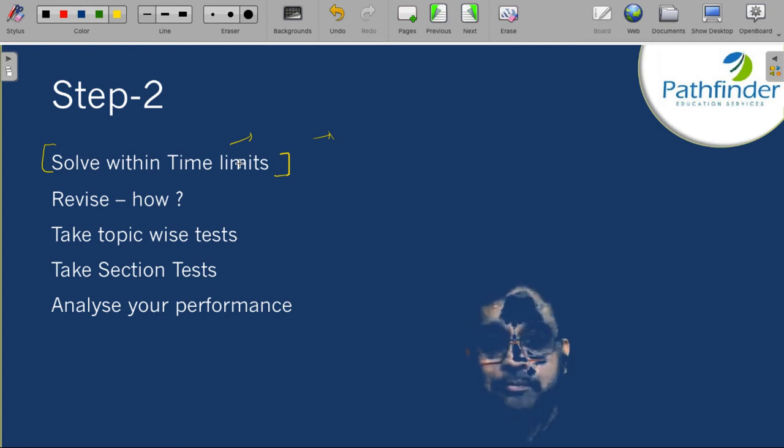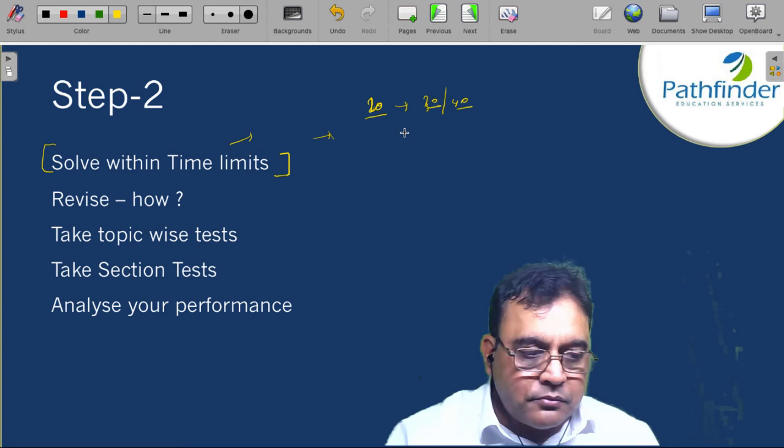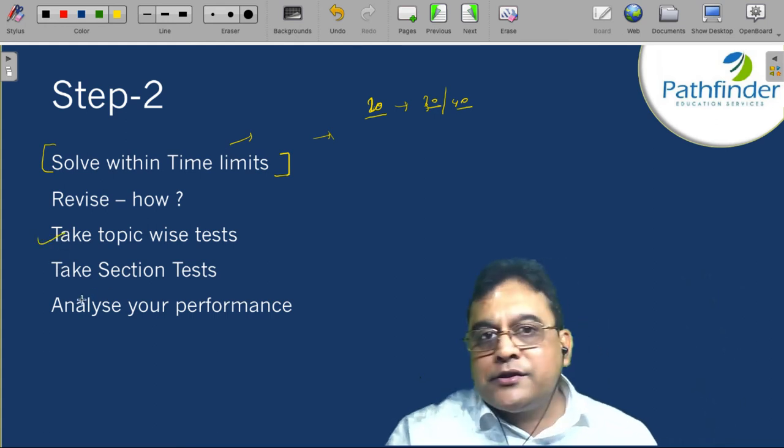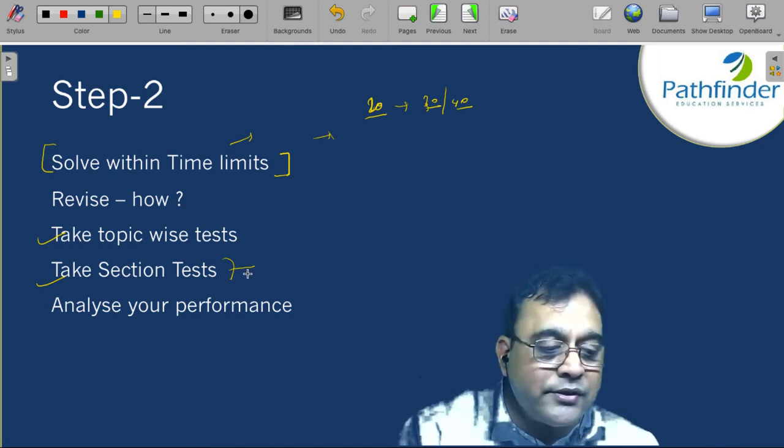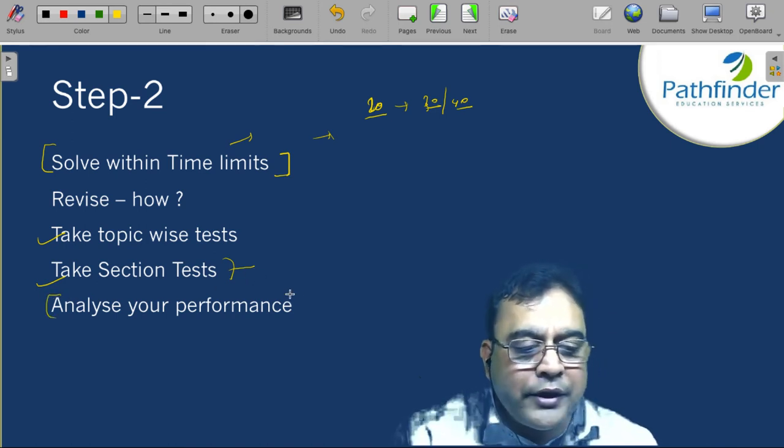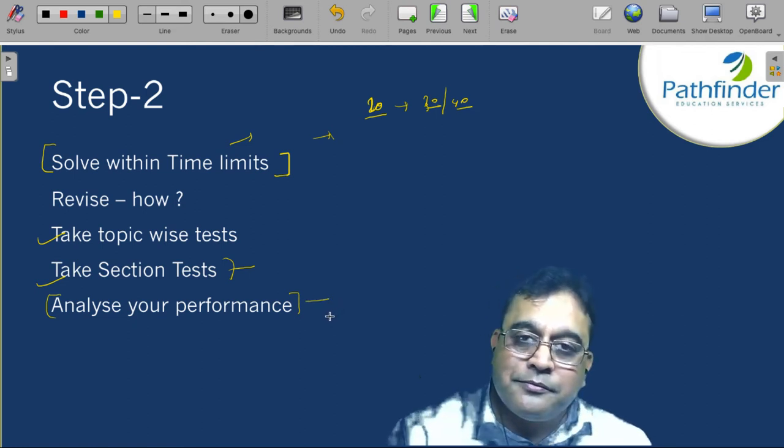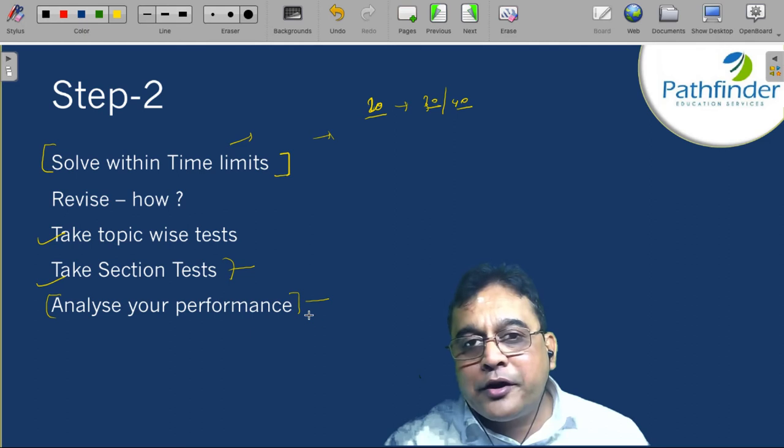So, whenever you are revising, put time limits on everything. For example, you want to solve 20 questions in one sitting, give yourself no more than 30 minutes or you could give yourself slightly longer durations initially, maybe 40 minutes. But you should aim to reduce it to 1 minute per question. That is what you should try to do. You should take topic wise tests. You should take section test where you have a mix of concepts tested in one test and you should always, always analyze your performance. Because if you do not analyze your performance, you will not know where to improve.